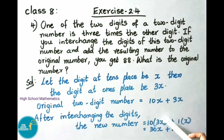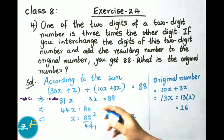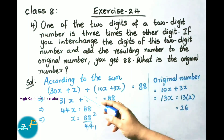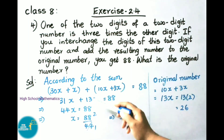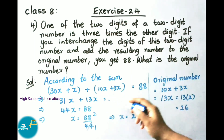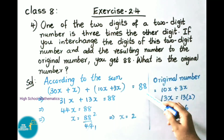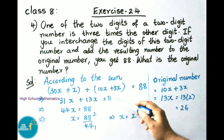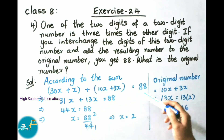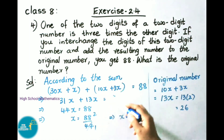So the interchanged number is 10 × 3x + 1 × x = 30x + x. According to the problem, after interchanging, the new number 30x + x plus the original number 10x + 3x equals 88. So: 30x + x + 10x + 3x = 88.